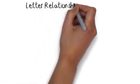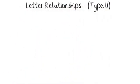Letter relationships, type U. In these questions, you will be given one group with two pairs of letters that are somehow linked to each other. There will also be another group that only has one pair of letters. The other pair is blank and you will have to work out which two letters make the pair.